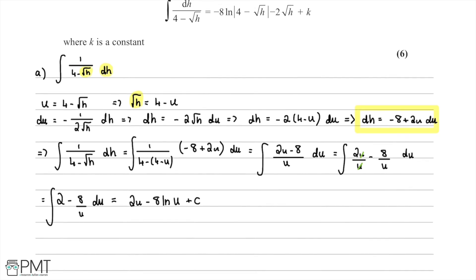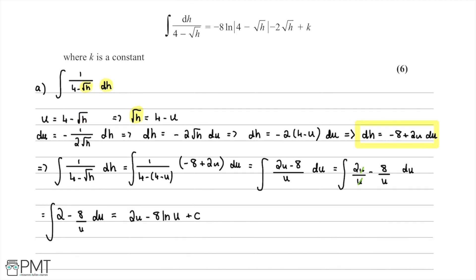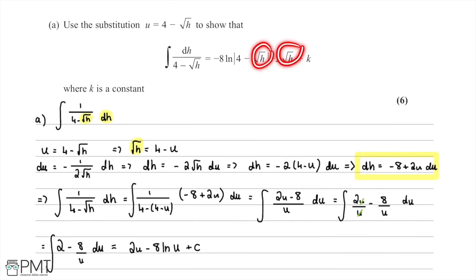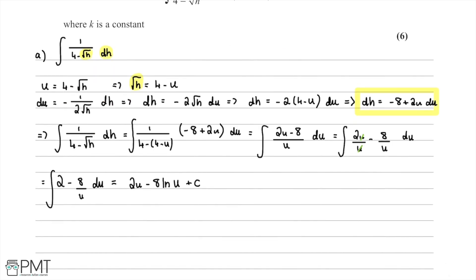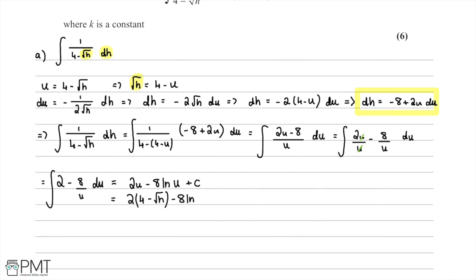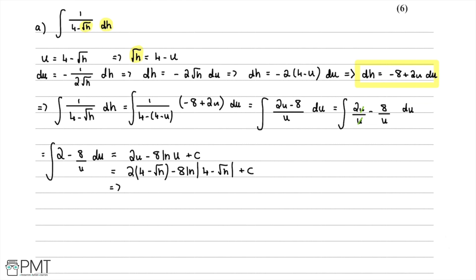Now we re-substitute u = 4 - √h back in, since the required answer is in terms of h. Substituting gives 2(4 - √h) - 8 ln|4 - √h| + c. Expanding the brackets gives 8 - 2√h - 8 ln|4 - √h| + c.